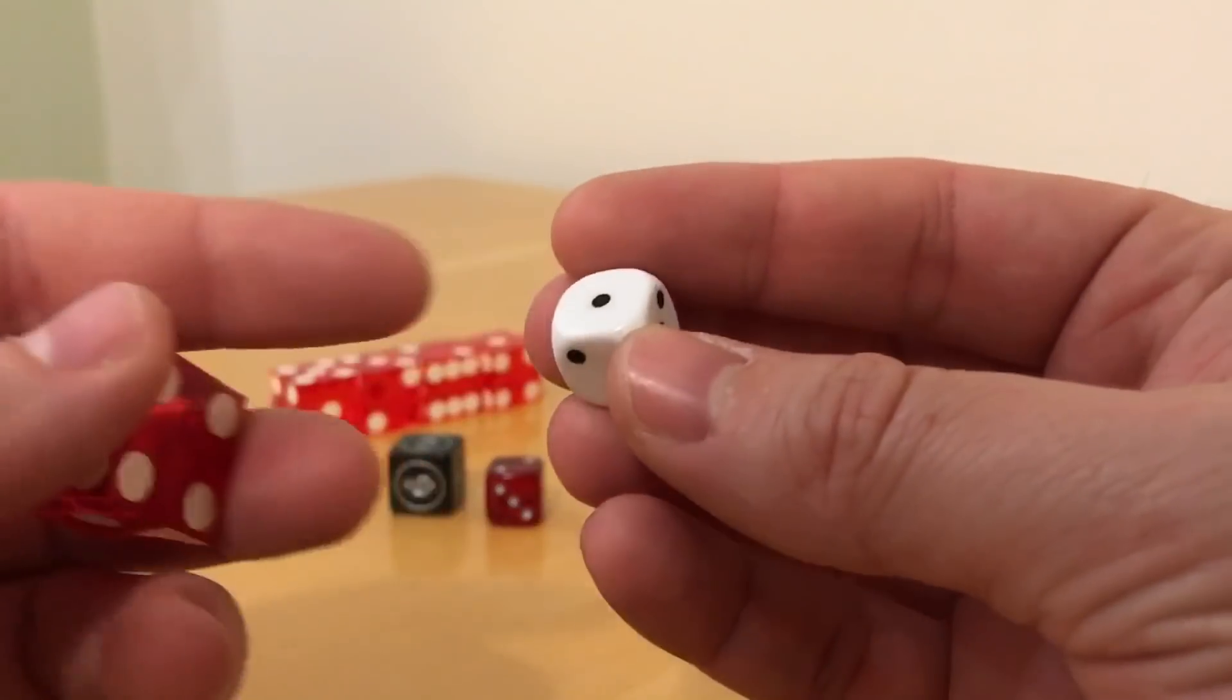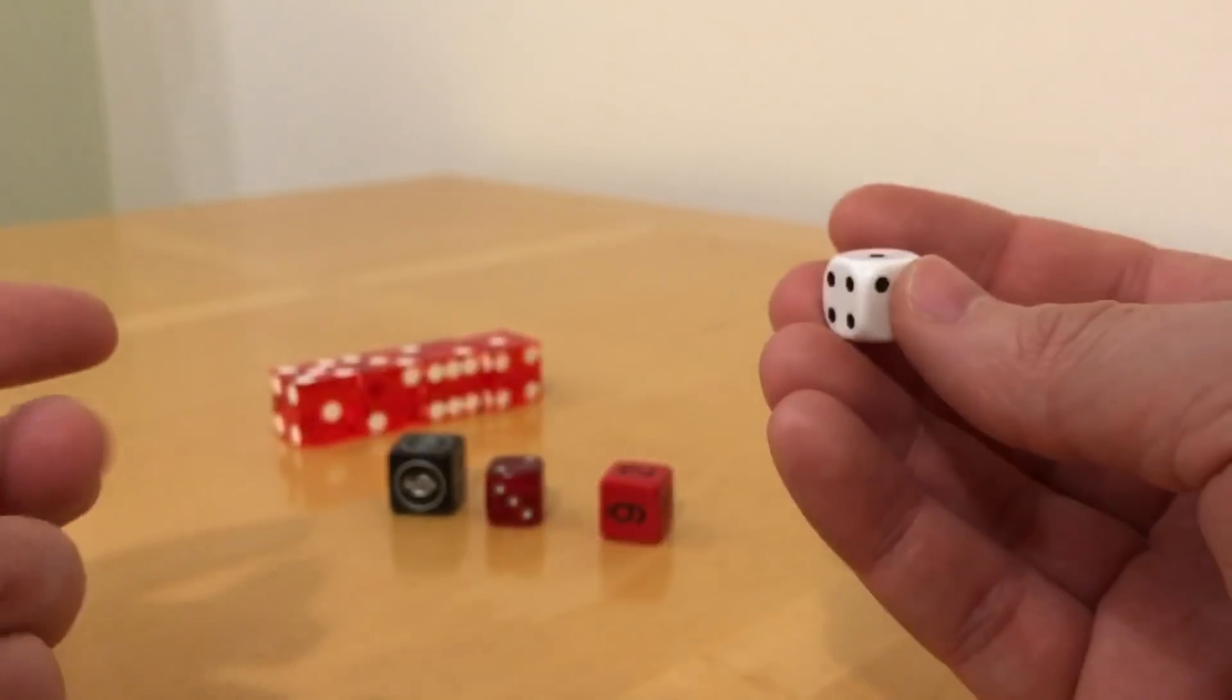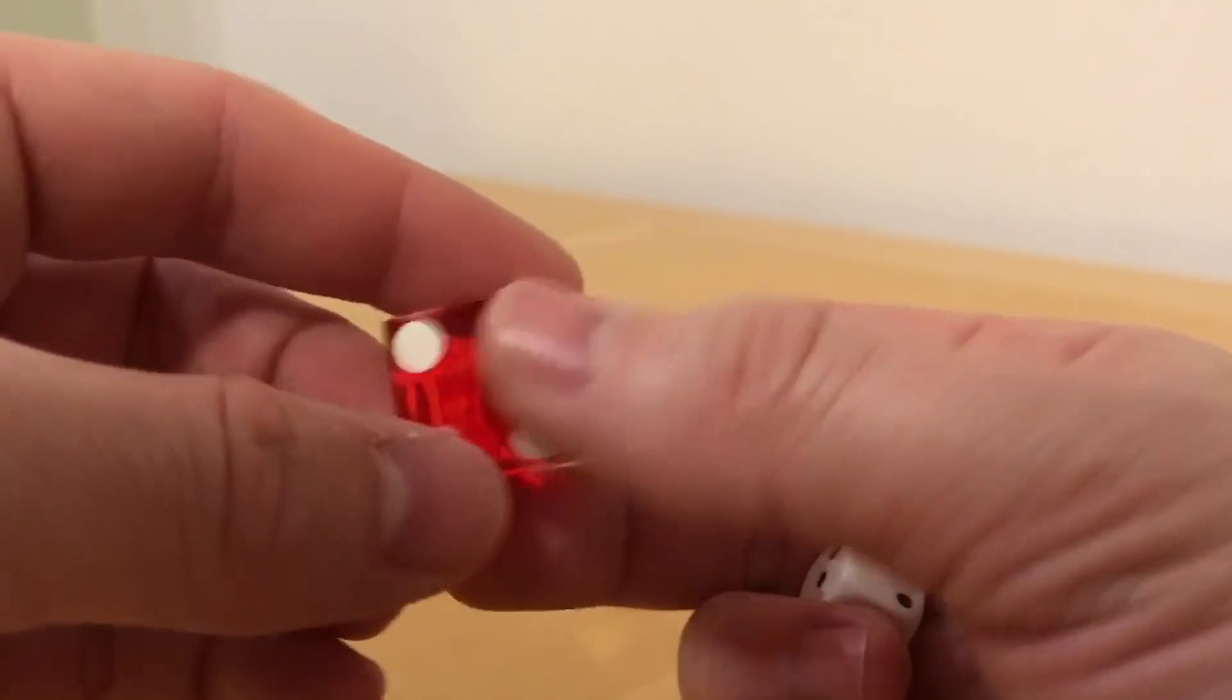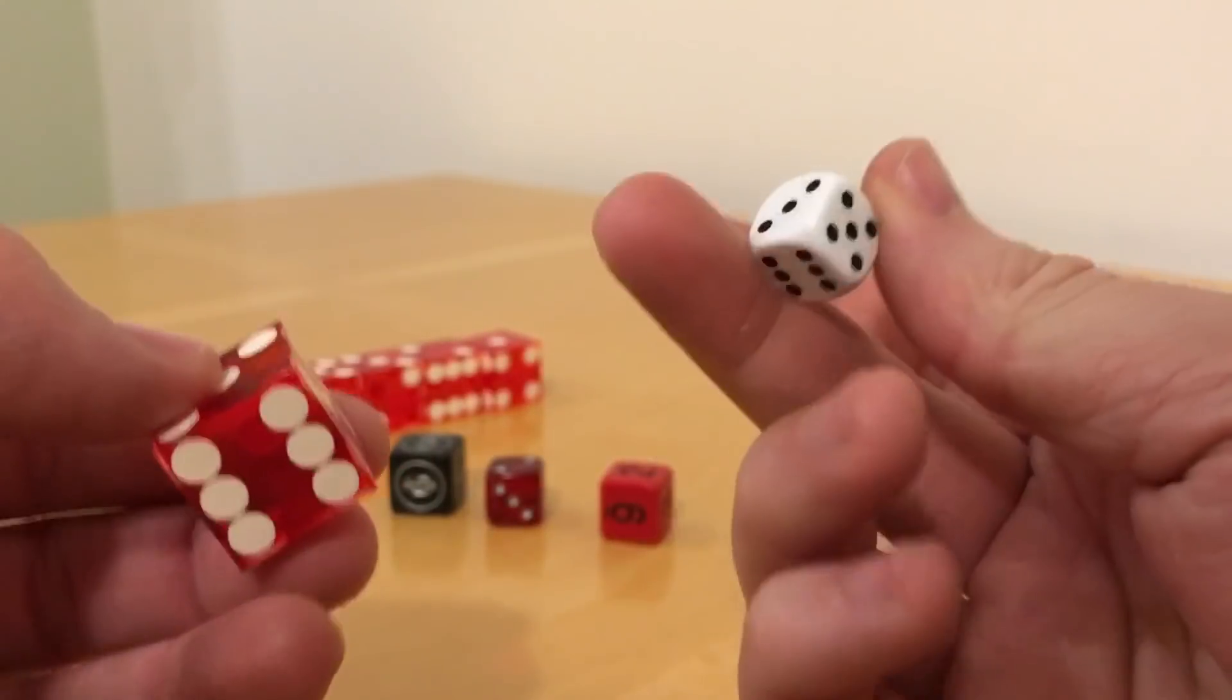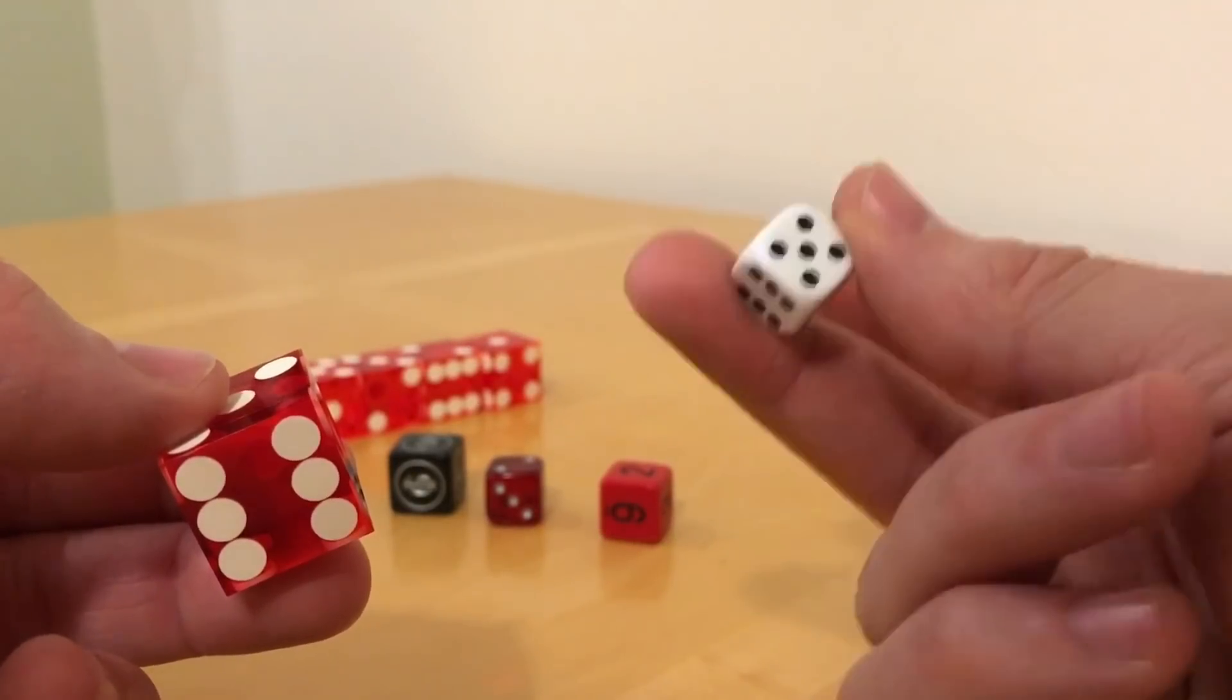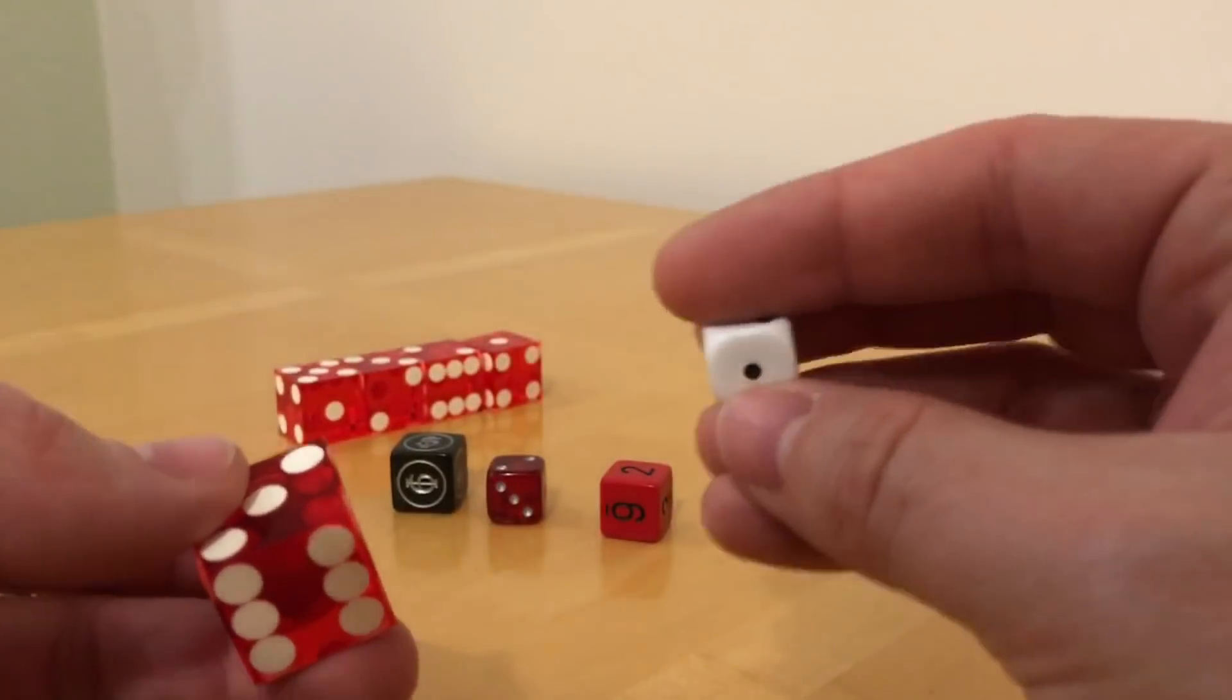Until someone does some other research to either corroborate what this guy found, or perhaps increase his sample size beyond 144,000, you would say there's a reason why casinos use dice like these because they give an even outcome of probabilities. They don't use ones like this because they're consistently wrong, I think is a way of phrasing it, to give an even probability of getting a one, two, three, four, five, or a six.